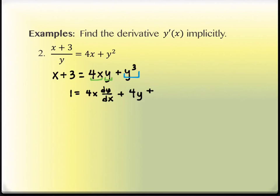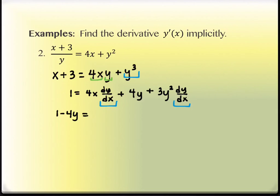On the next one — y cubed — it's not a product rule but we have a chain rule, so we get dy/dx because there's a y. The derivative of y cubed is 3y squared times dy/dx. Now, the goal is to solve for dy/dx. There are two of them, so everything that has dy/dx needs to be grouped together. Everything without dy/dx gets moved to the other side. I'll move 4y to the left: 1 minus 4y on the left equals 4x dy/dx plus 3y squared dy/dx.